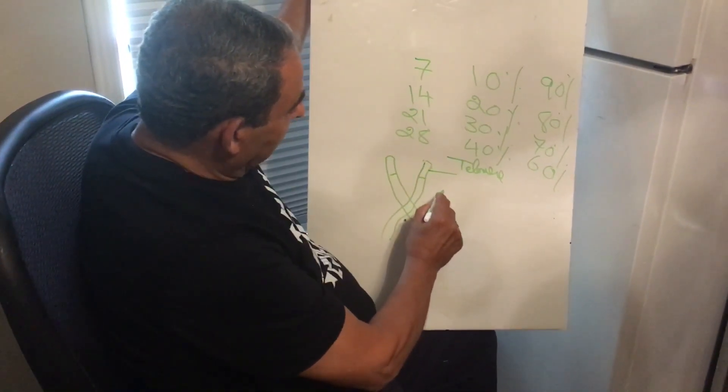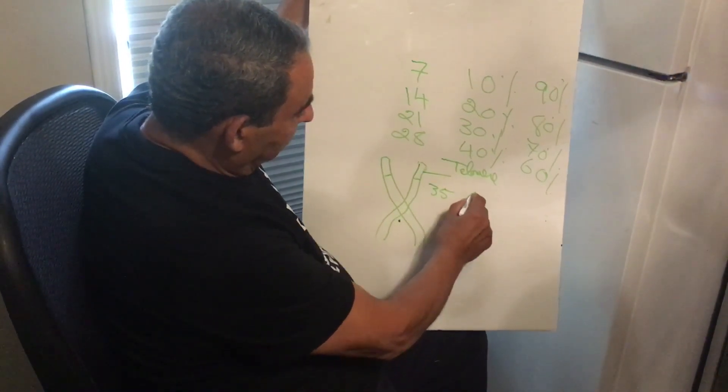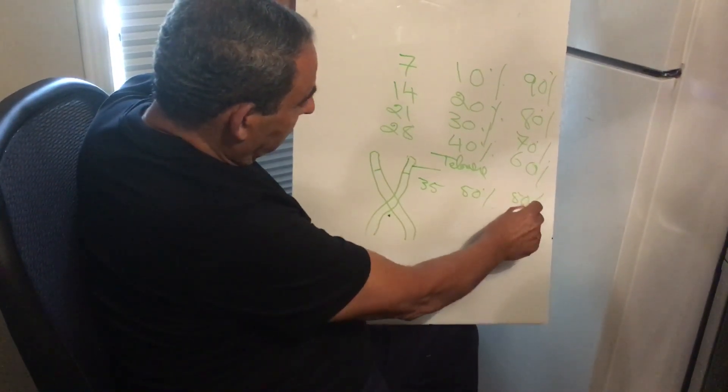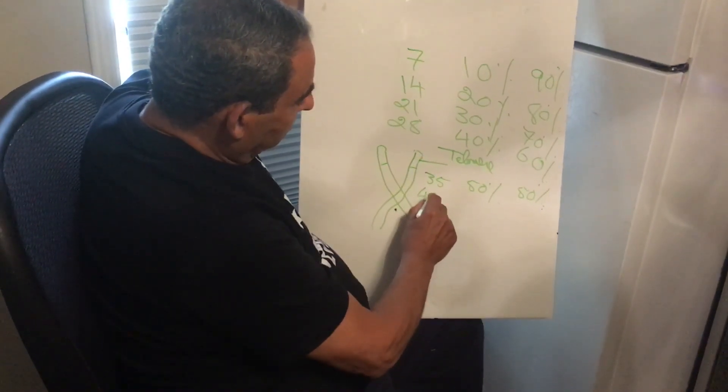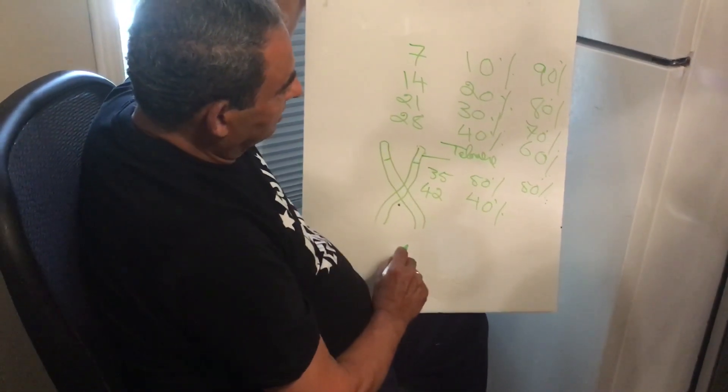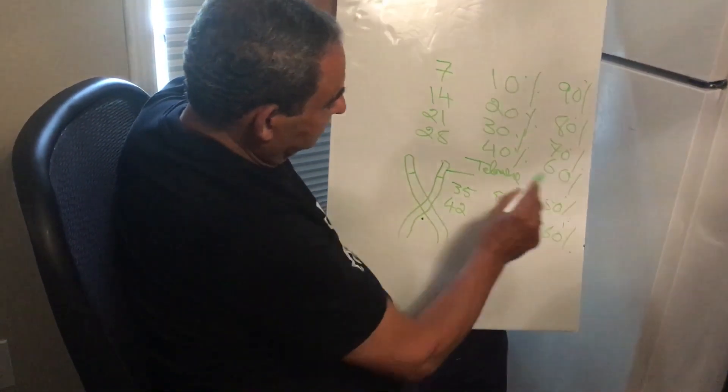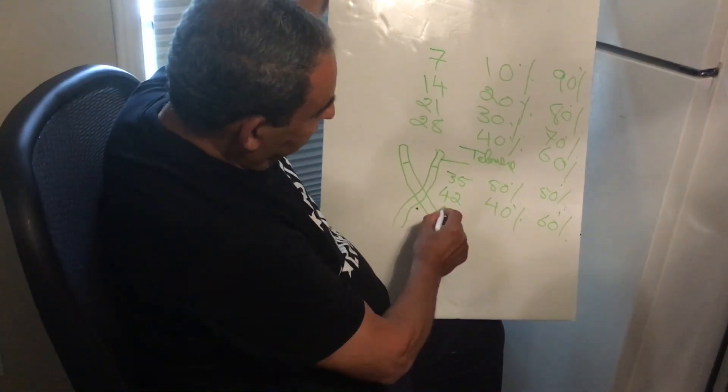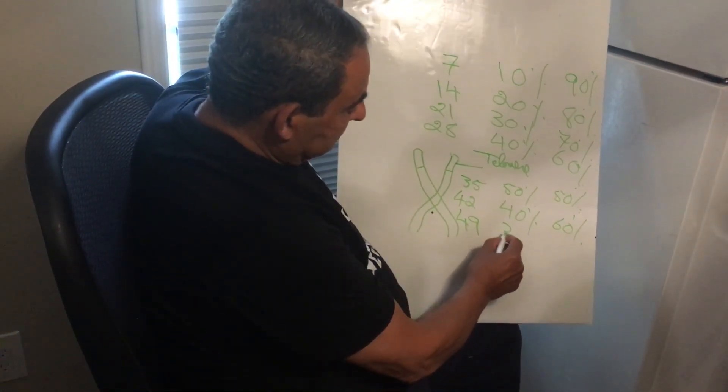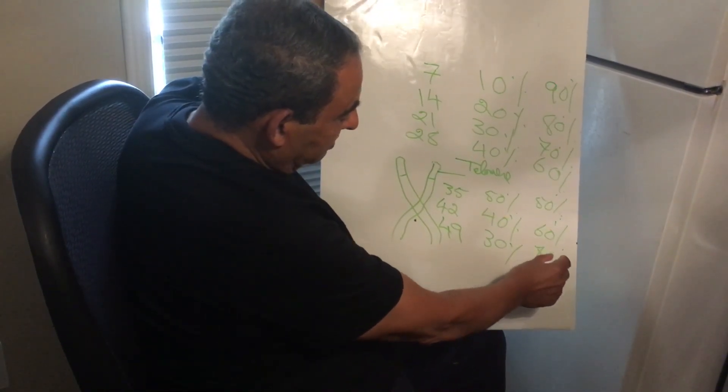At thirty-five, you have fifty percent depleted and fifty percent left. At forty-two, you have forty percent depleted and sixty percent left. At forty-nine years old, you still have thirty percent left and seventy percent depleted.